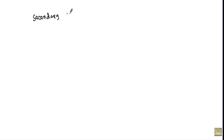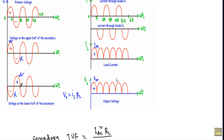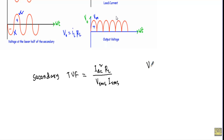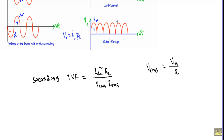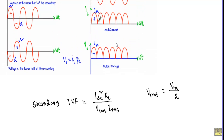The secondary transformer utilization factor equals IDC squared times RL, divided by Vrms times Irms. Here Vrms is the pure sinusoidal RMS voltage of the secondary half-winding. The Irms is the RMS value of the secondary current, which is unidirectional, so Irms equals Im divided by root 2, or 0.707 Vm.